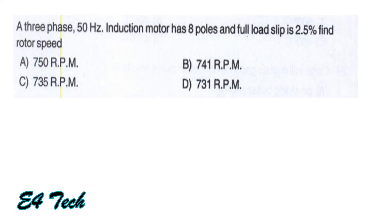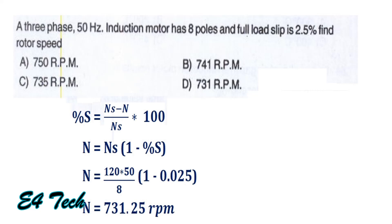A 3-phase, 50 Hz induction motor has 8 poles and full load slip of 2.5%. The rotor speed is calculated as: Ns = 120F/P = 120×50/8 = 750 RPM. Rotor speed N = Ns × (1 - S) = 750 × (1 - 0.025) = 731.25 RPM. That is option D.